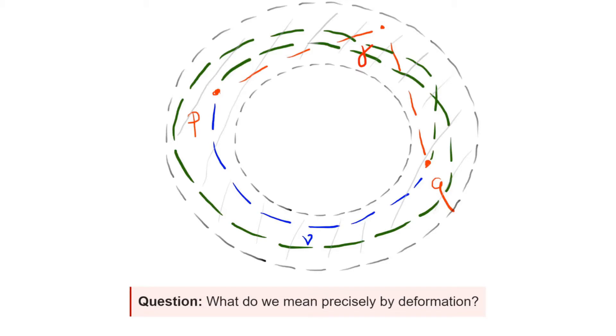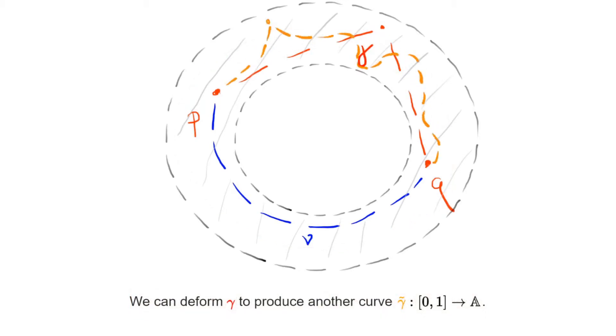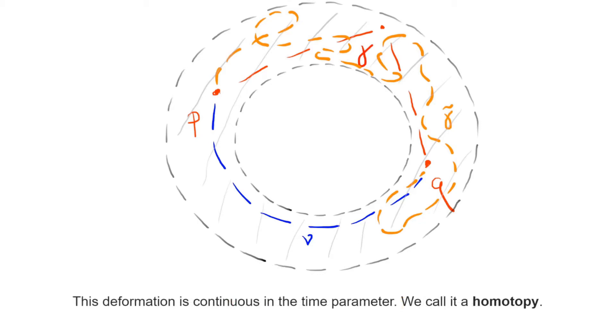The intuitive idea is exactly what you expect. You can picture a movie of curves that starts with a given curve gamma and finishes at some other given curve gamma tilde. During this process, we require not only that every single curve is continuous, but also that the family as a whole is continuous in time.